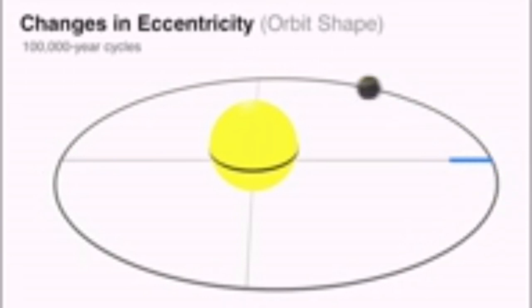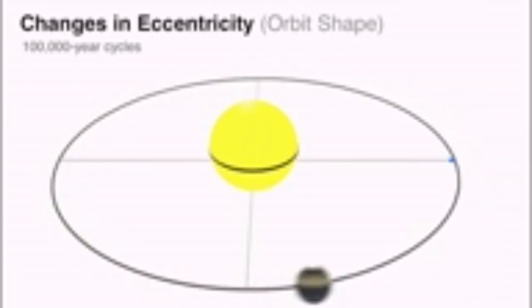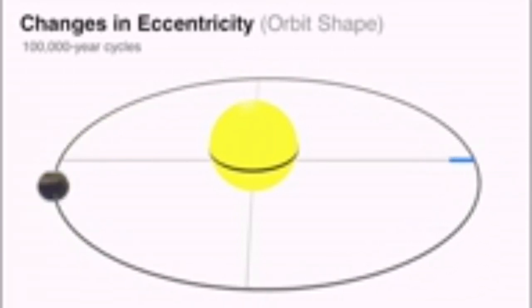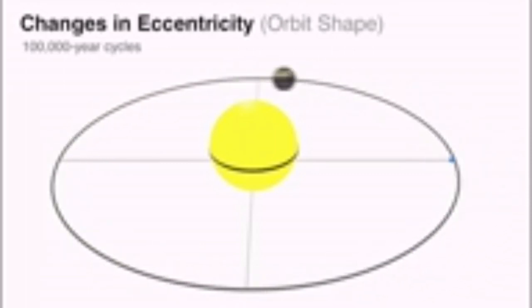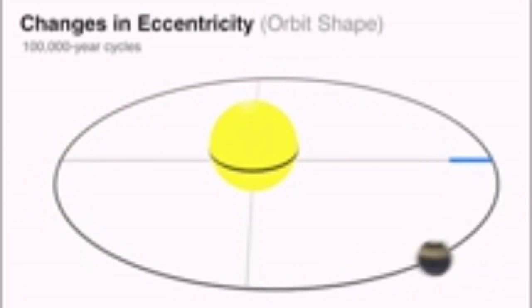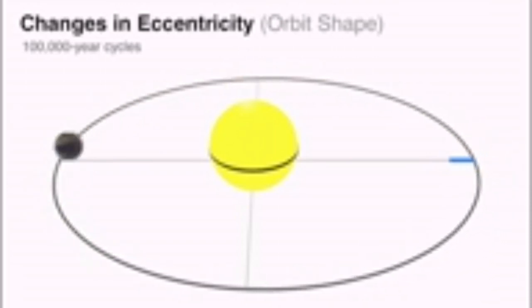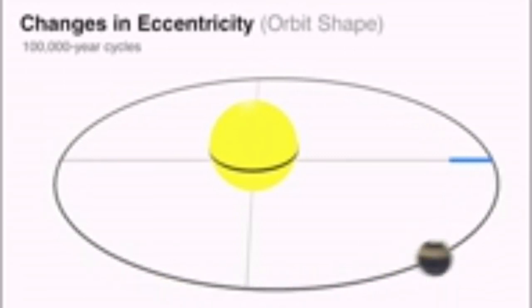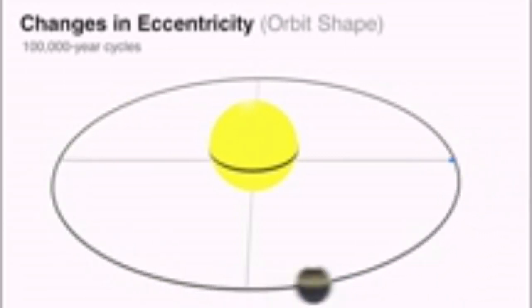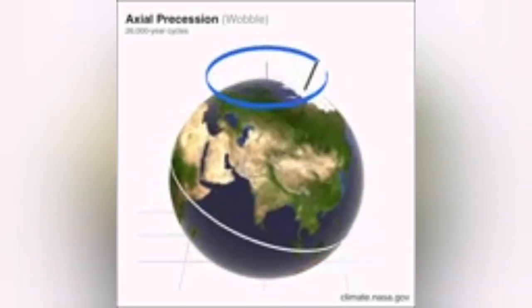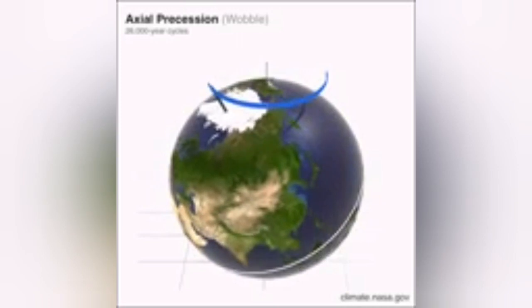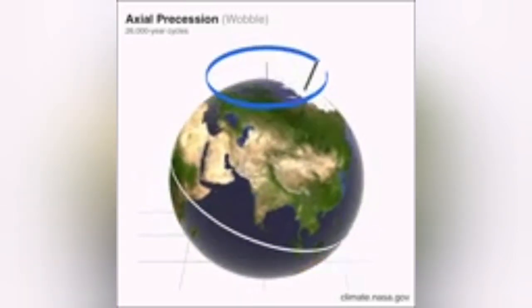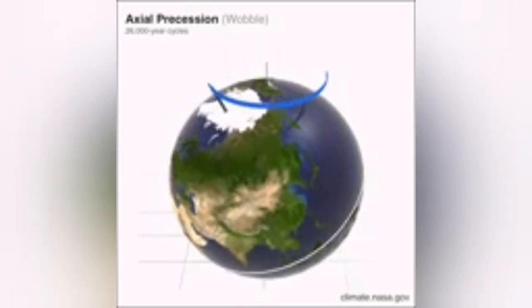Earth orbits the sun not in a circle but in an oval shape, so it gets closer to and farther from the sun, changing the rate of energy received. This orbit also changes gradually. Another factor is the tilt of the Earth's axis, which rotates like a spinning top — a motion known in astronomy as precession.